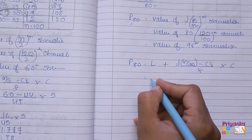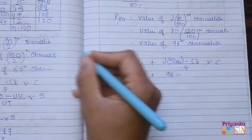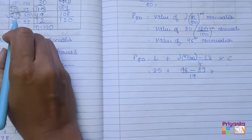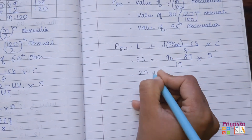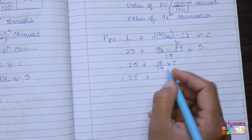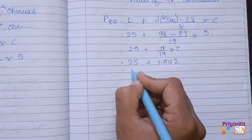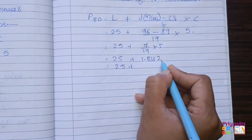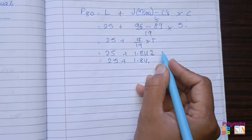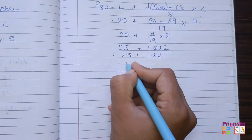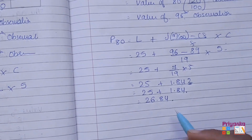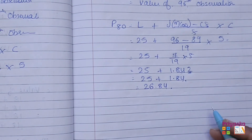For P80, the observation is 96. In the cumulative frequency, 96 falls under 108, so the class is 25–30. The lower limit is 25, CF above is 89, frequency is 19, and class length is 5. Calculation: 25 plus (96 minus 89) divided by 19 into 5 gives 7 upon 19 into 5, which equals 1.84. So 25 plus 1.84 gives 26.84. The lower limit for the richest 20% of employees is 26.84 thousand.